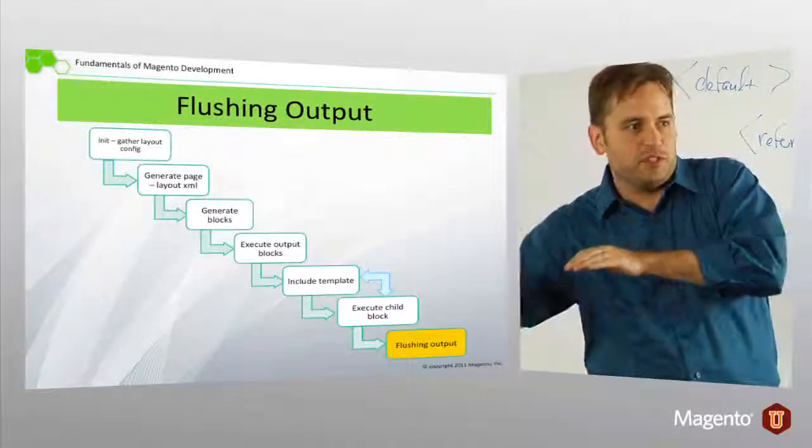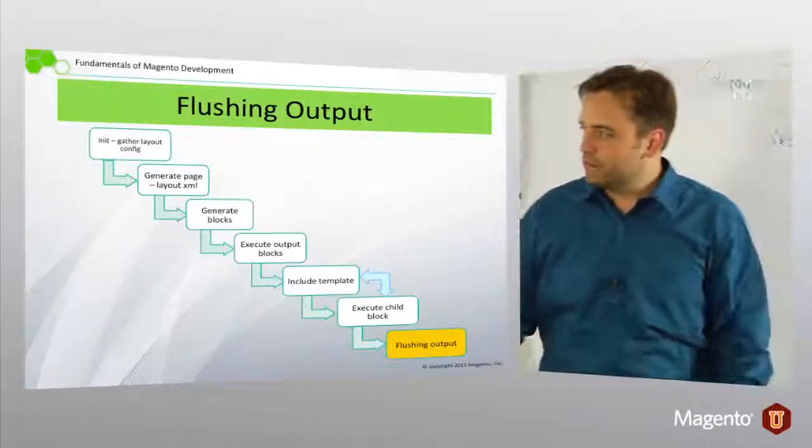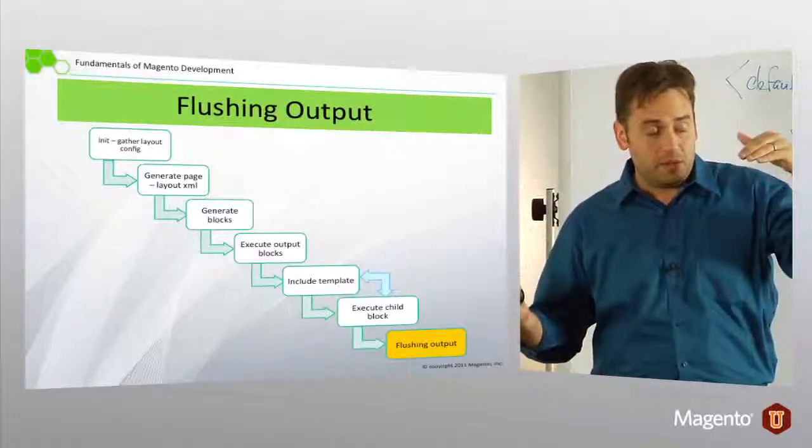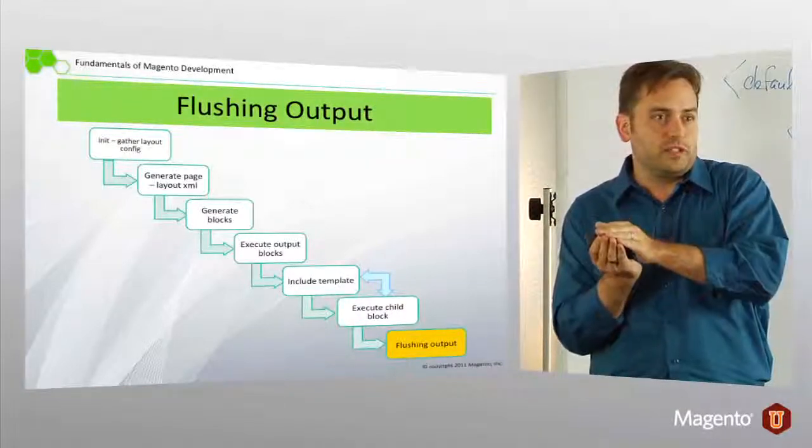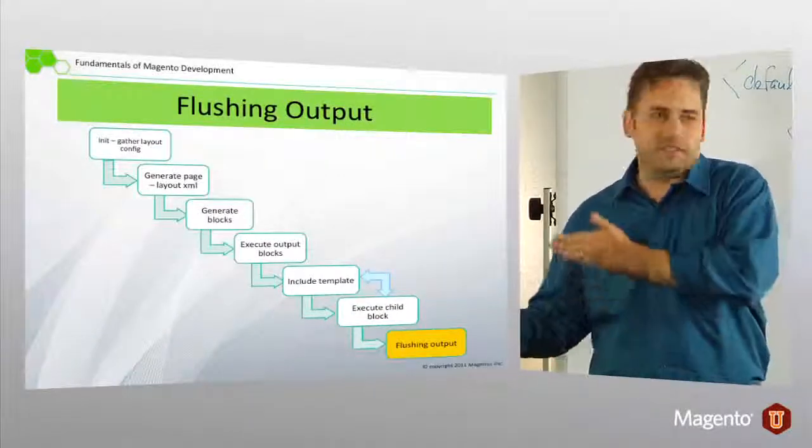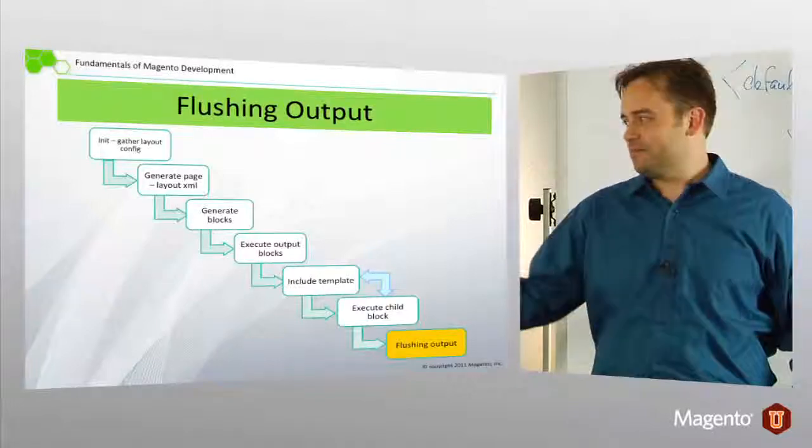This happens recursively through all these child blocks, and we just keep building out our response—just a string—attach it to the response object, and flush it to the browser.